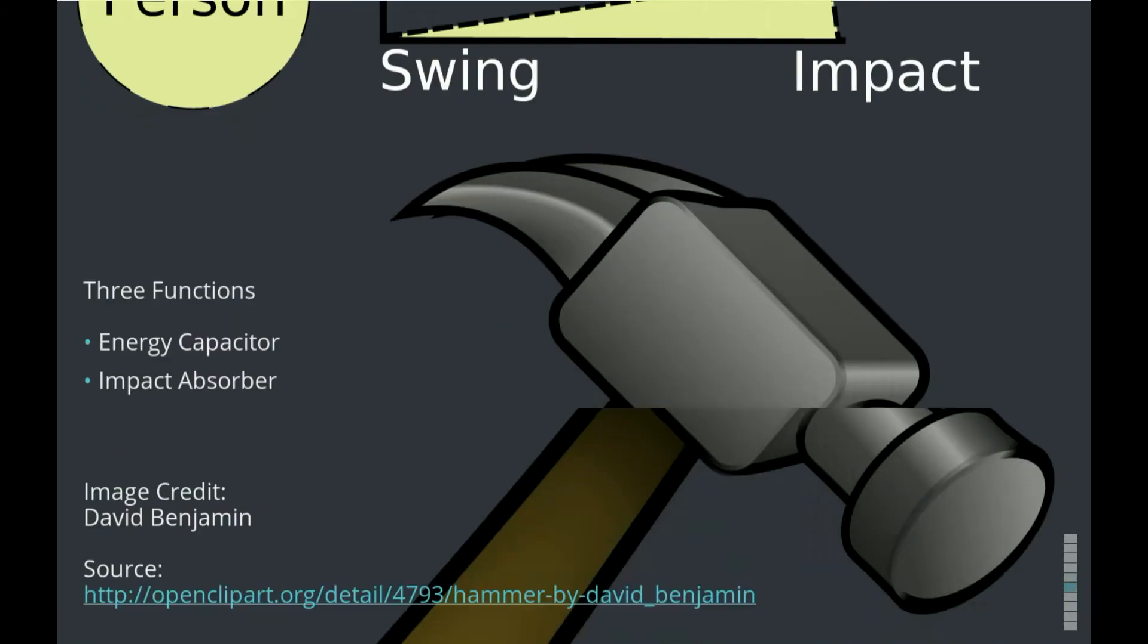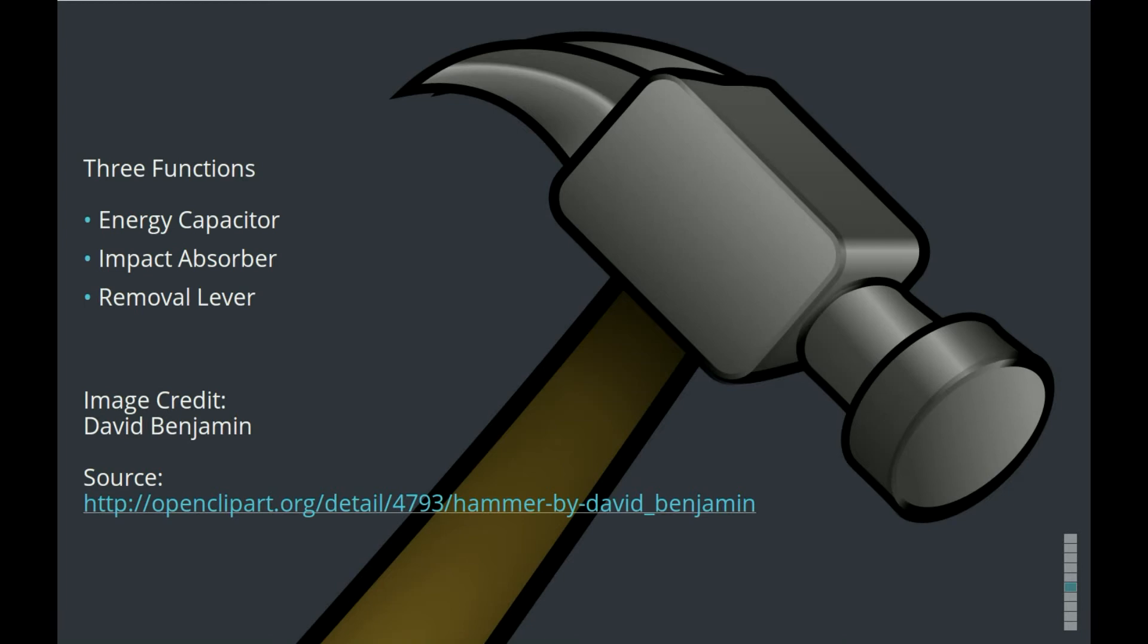A hammer actually has more than one function. An energy capacitor function. It can also remove nails. It doesn't act as a capacitor there. It's acting as a pure lever. Also, to absorb some of the impact or reduce the impact that goes into the person's hand.